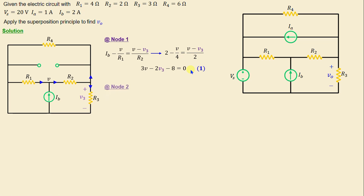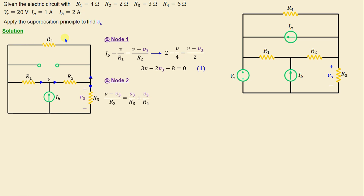At node 2, we write: (V − V3) / R2 = V3 / R3 + V3 / R4. Replacing R2, R3, and R4 with their numerical values and simplifying, we obtain the second equation: 3V − 6V3 = 0.